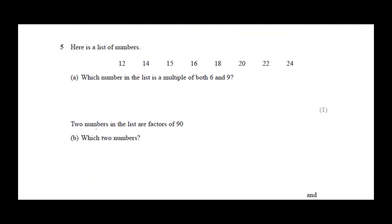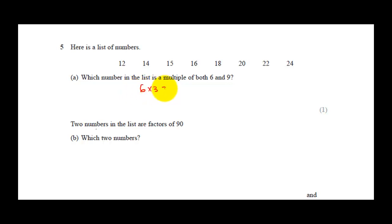Question 5: here is a list of numbers — 12, 14, 15, 16, 18, 20, 22, and 24. Which number in the list is a multiple of both 6 and 9? Checking: 6 × 3 = 18 and 9 × 2 = 18. So 18 is the correct answer — it is a multiple of both 6 and 9.